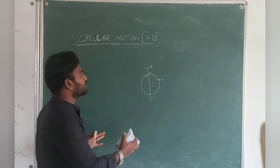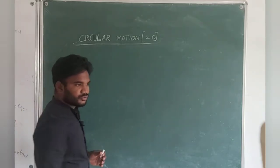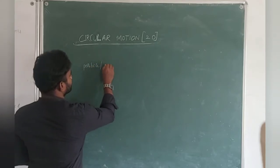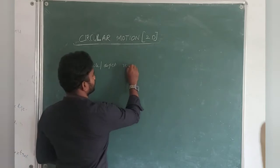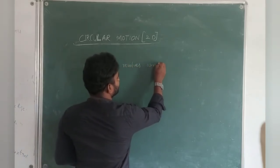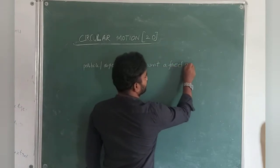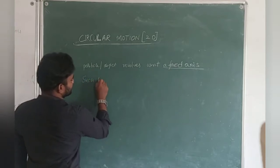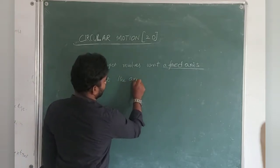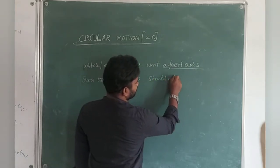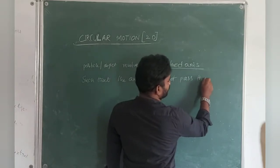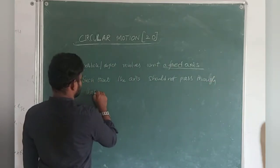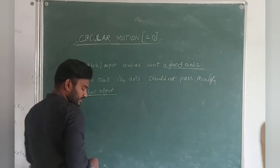So what do you mean by circular motion? A circular motion is a kind of motion in which a particle or an object revolves with respect to a fixed axis, such that the axis should not pass through the object. This is the definition of circular motion.